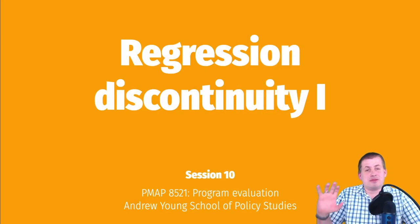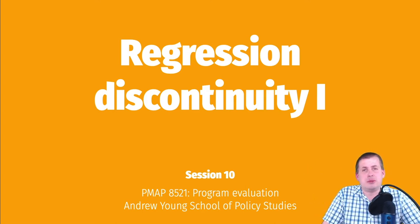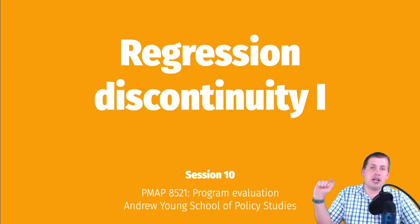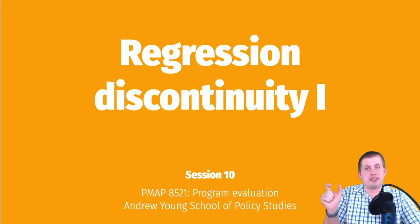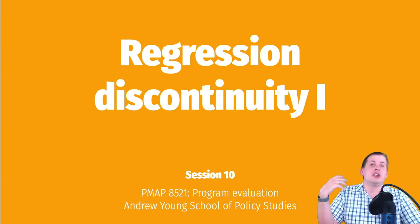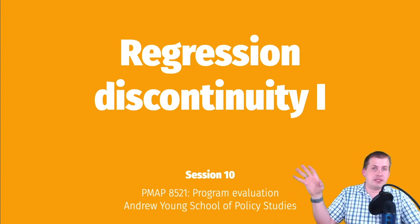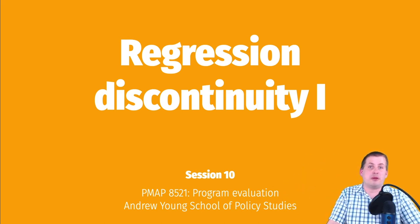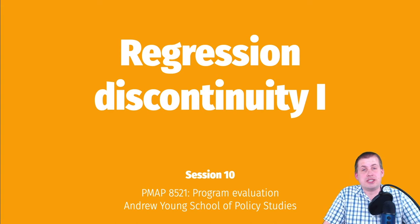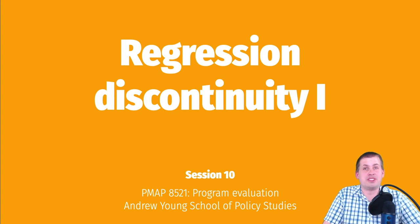This is part one of the regression discontinuity section. If you notice in the schedule, we're not covering part two in the next session, because in order to understand part two we have to understand how instrumental variables works. We'll cover that in the next session, and then after we understand that we can move on to the second part of regression discontinuity — fuzzy regression discontinuity — which you need instrumental variables for. Today we're mostly talking about the intuition behind regression discontinuity, and in the example page you'll have a whole bunch of R code walking you through all the different steps to actually do this type of analysis.